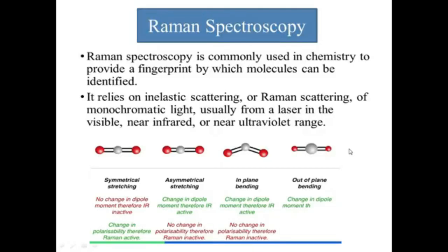Raman spectroscopy is commonly used in chemistry to provide a fingerprint by which a molecule can be identified. It relies on the inelastic scattering, or Raman scattering, of monochromatic light — usually from a laser in the visible, near-infrared, or near-ultraviolet range.